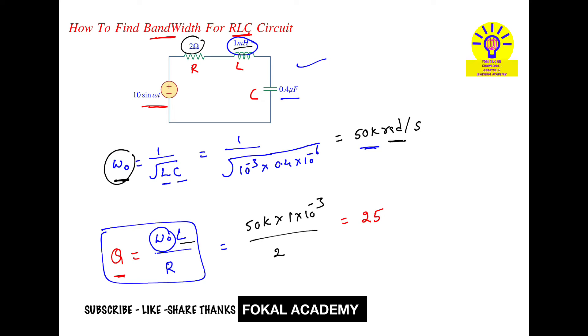So that is 25. Now we can easily find bandwidth. Bandwidth equals resonant frequency by quality factor. Resonant frequency we got as 50k, and quality factor we got as 25. By simplifying this, we will get 2 kiloradians per second. This is the bandwidth for the given RLC circuit.